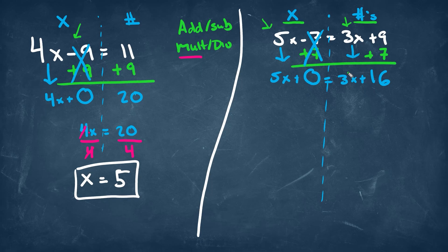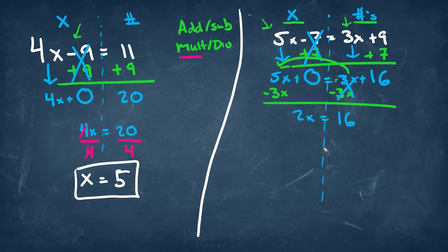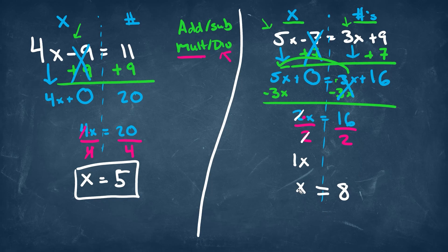We'll drop down our remaining items: 5x is equal to 3x plus 16. What we'll do next is move the 3x to the other side. We have a positive 3x, so we're going to subtract 3x on both sides. We're going to be left with 2x is equal to 16. We have 2x — that's multiplication — so we're going to do the opposite, which is divide by 2 on both sides. 2 divided by 2 cancels out, leaving x. Our answer is 16 over 2, which simplifies to 8.